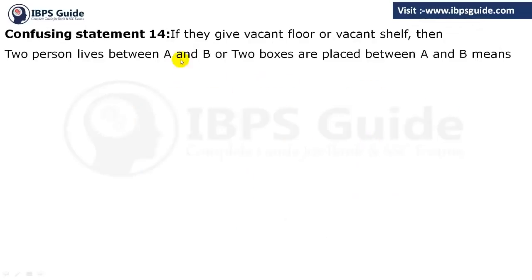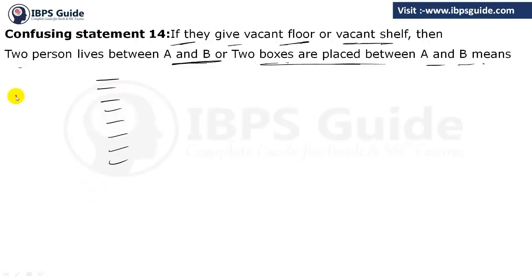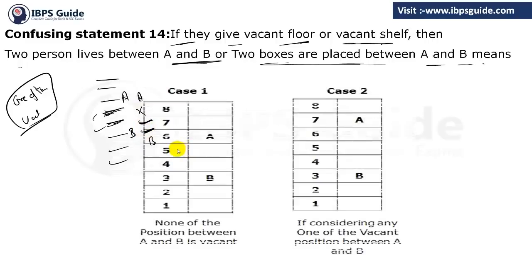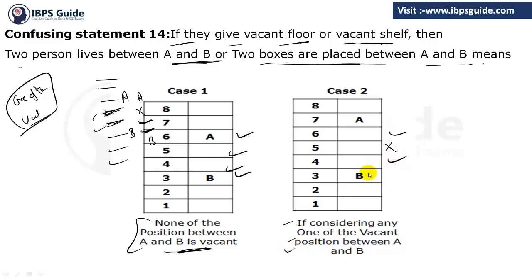If they give a vacant floor or vacant shelf — for example eight floors with one vacant — and they say there are two persons between A and B, you must account for the vacancy. Suppose A is here and they say there are two persons between A and B. B can be here or B can be here. One floor is vacant, so on two positions there must be persons leaving. If one floor between them is empty, it still forms two persons between A and B. The vacant floor is counted in spacing but not as an occupied floor.